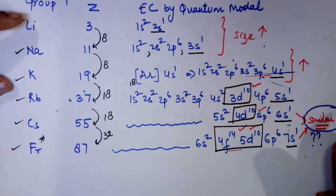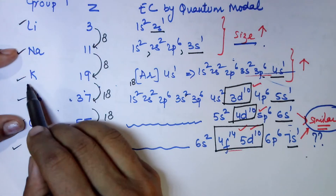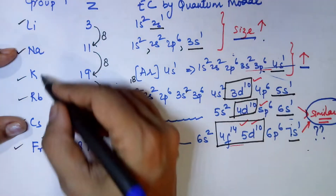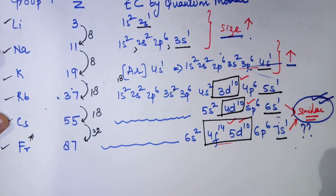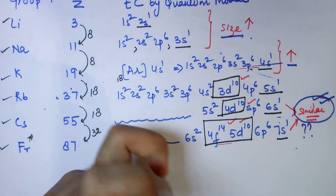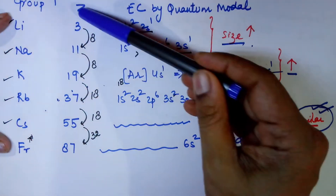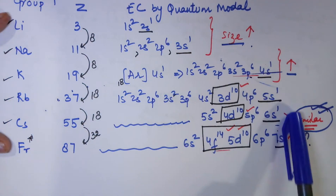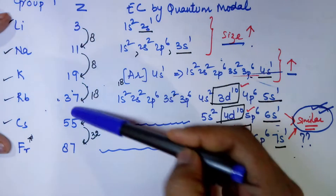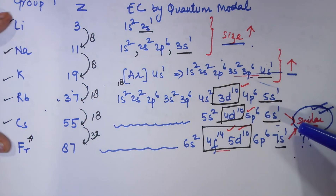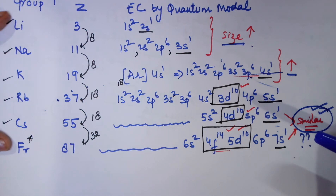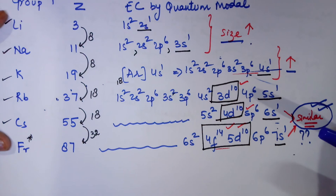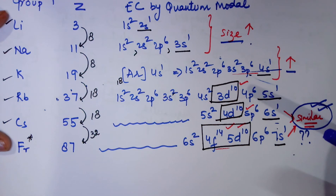In conclusion, down the group: from the first to the second member, size increases; sodium to potassium, size again increases; potassium to rubidium, not much of an increase; and the last two members, cesium and francium, have almost similar atomic radii. In Class 10 we studied that down the group atomic radii increases because a new shell is incorporated. Now in Class 11 we say atomic radii does increase, but the increase is not much, and towards the end the last two members have almost a similar atomic radii. From Class 11 onwards, the conclusion is: down the group, size does increase, but the magnitude of increase goes on decreasing.